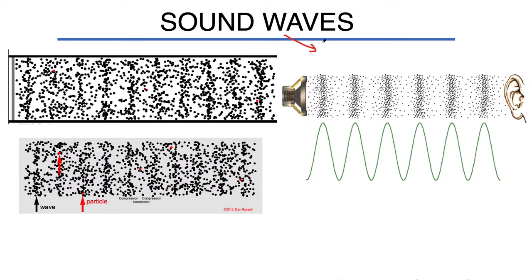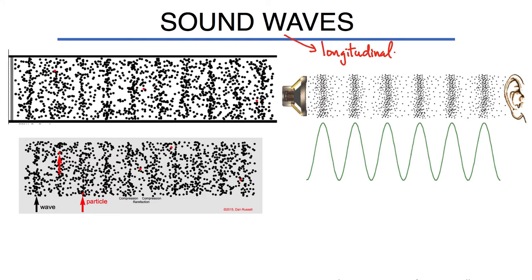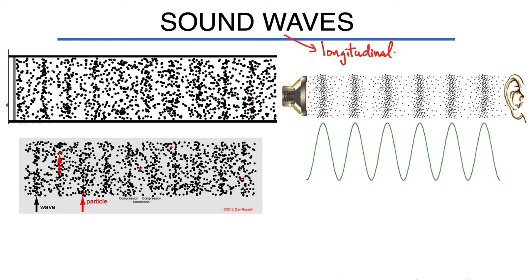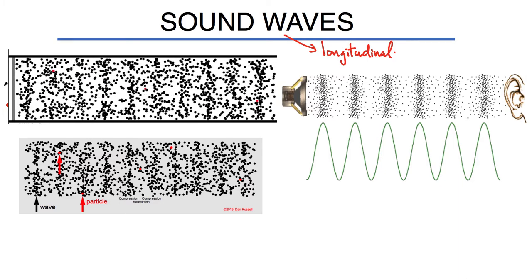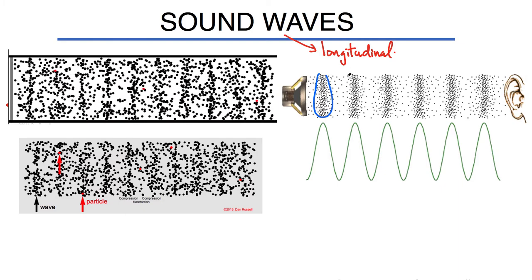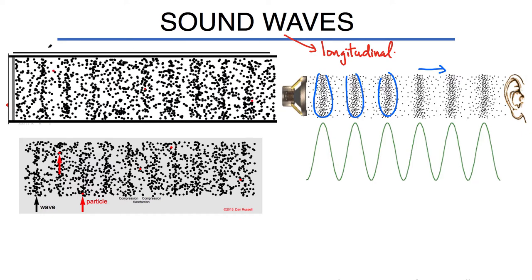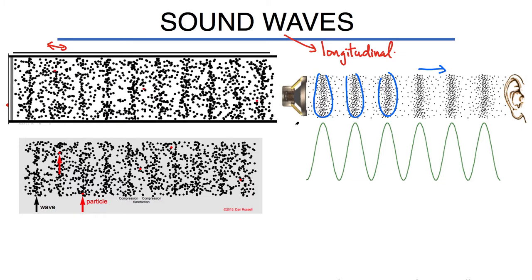Sound waves are an example of longitudinal waves. Consider a simulation where a gray line represents the edge of a speaker — that speaker simply oscillates back and forth. The air molecules closest to it have to move with the speaker, producing regions of compression. Then it moves away and compresses air again. These regions of compression propagate to the right — regions of high pressure where there's a large density of particles — and those will travel as a wave.